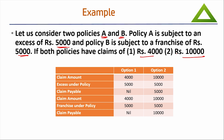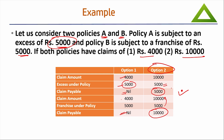Now if both the policies have claims of 4000 and 10000 — in option one, with deductible provision up to 5000, the claim amount is 4000. Under excess (straight deductible), since the loss is not more than 5000, the insurance company pays you nothing. Under franchise also, since the loss is less than 5000, the insurance company pays nothing. But the difference arises when the loss amount is 10000. Under the excess provision, you will be paid only 5000. But under franchise provision, since the loss is more than 5000, they will pay you the full 10000. This is the difference, and this is what is importantly asked in examination.